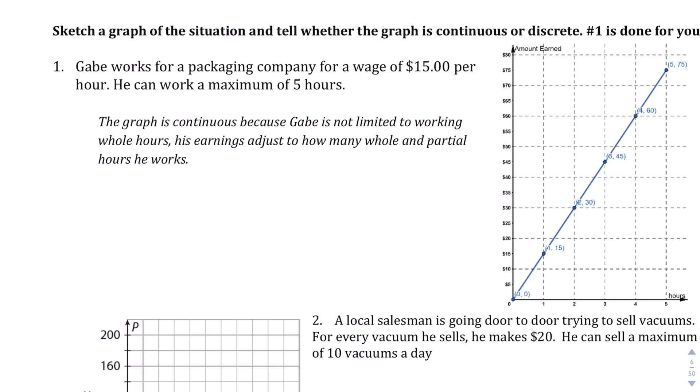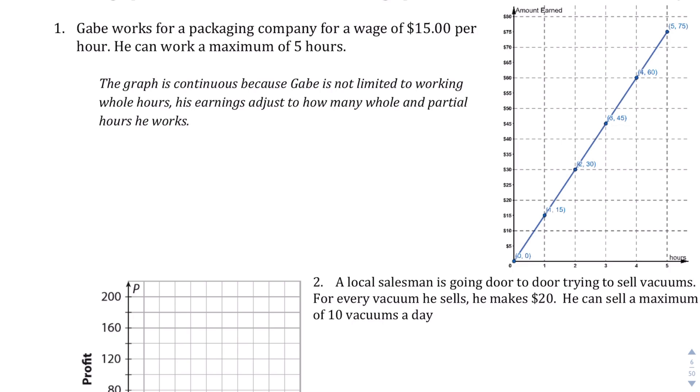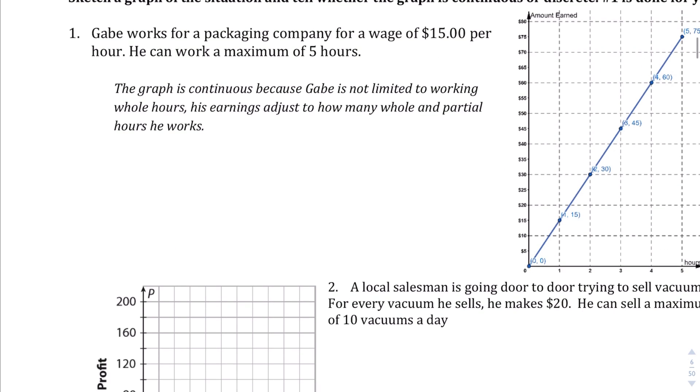So you should have read in explain 2 about the differences between continuous and discrete graphs. I'm going to assume that you've already read it. But we are told that this graph is continuous because Gabe is not limited to working whole hours. He can work half an hour. He can work maybe a quarter of an hour maybe. And they will adjust his pay accordingly based on that. So let me see. They've already done question 1 for us. So let's move on to question 2.